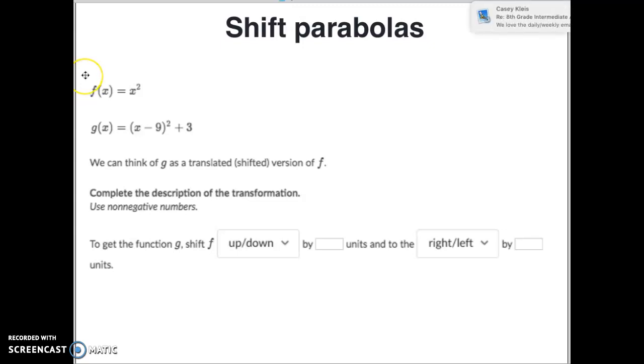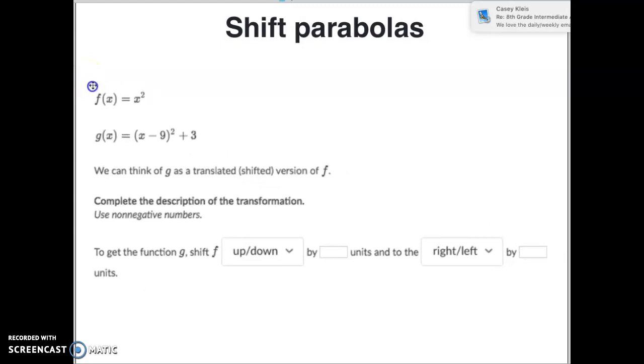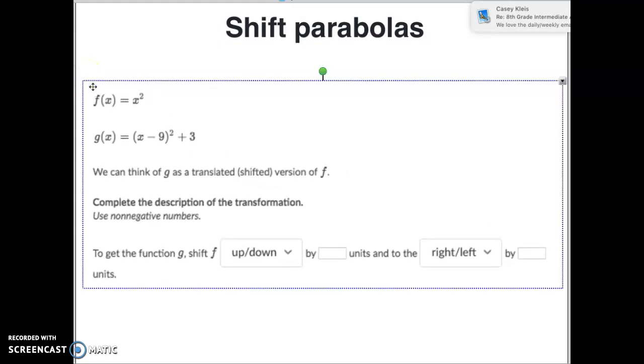What we're trying to do is we are trying to go from this parabola, which would just be a parabola that would have the vertex at 0, 0, to where this parabola would be. And you should know the vertex of this one. The vertex here is the opposite of this, so the vertex would be at positive 9 and positive 3.